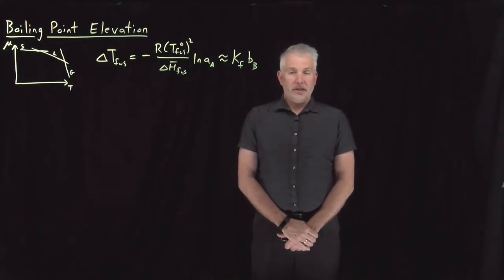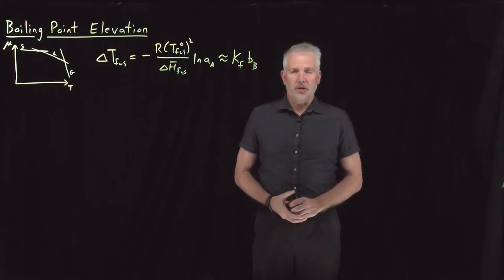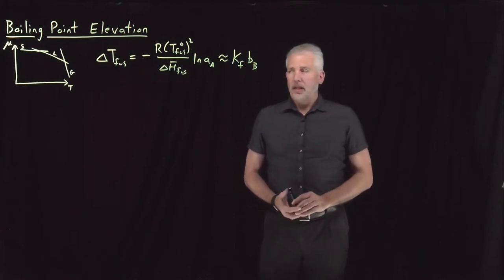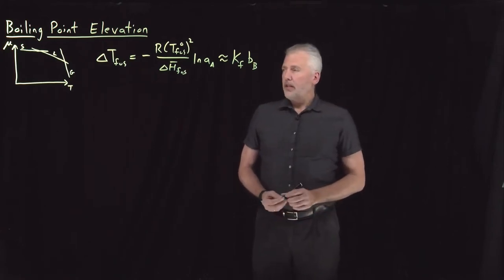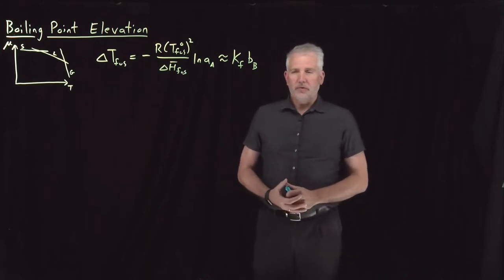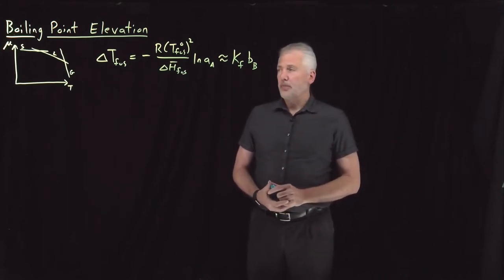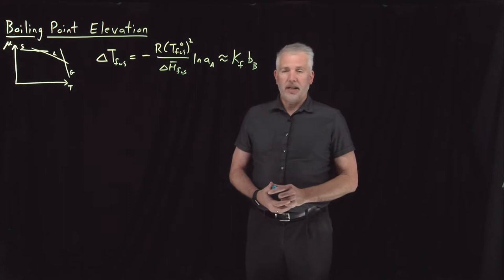We've seen the freezing point depression — the fact that the freezing point of a solution is lower than the freezing point of the pure solvent. The presence of a solute in a solution will also affect the boiling point of that solution, so the next step is to understand how that works.